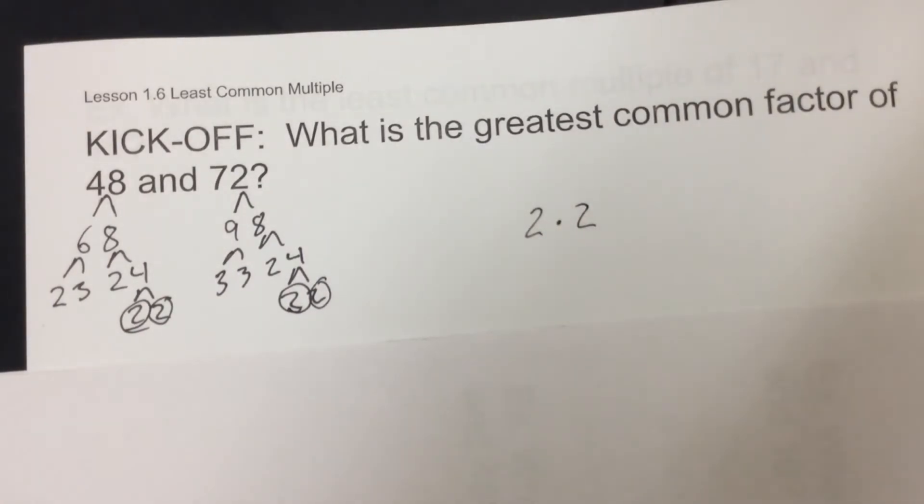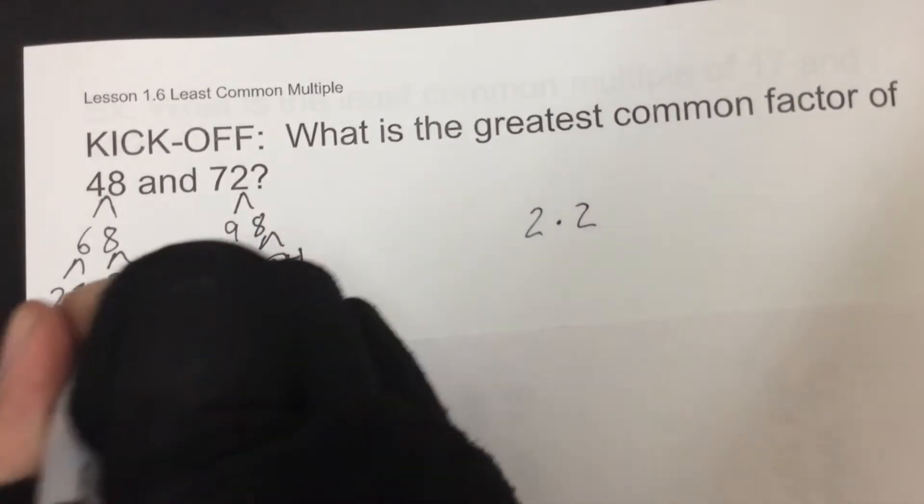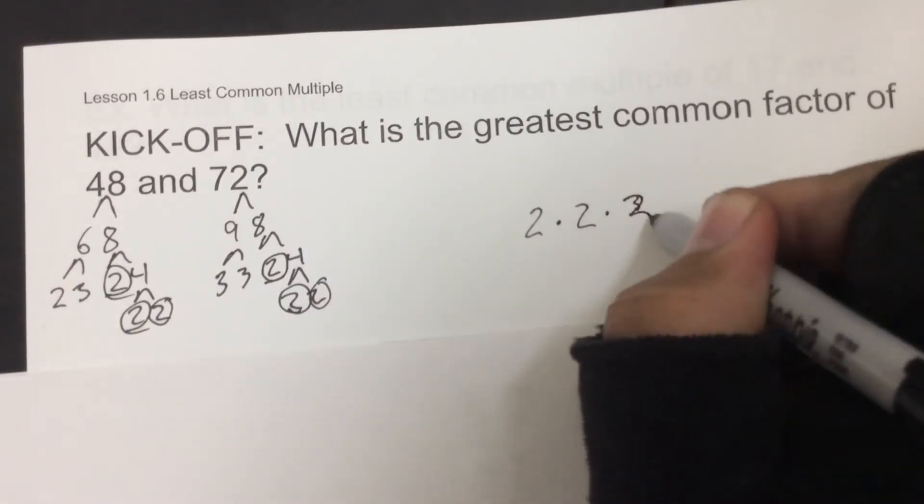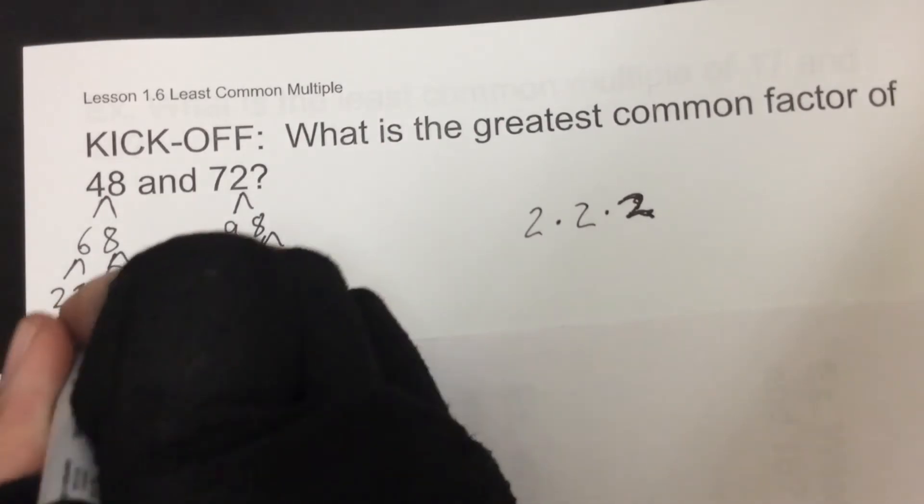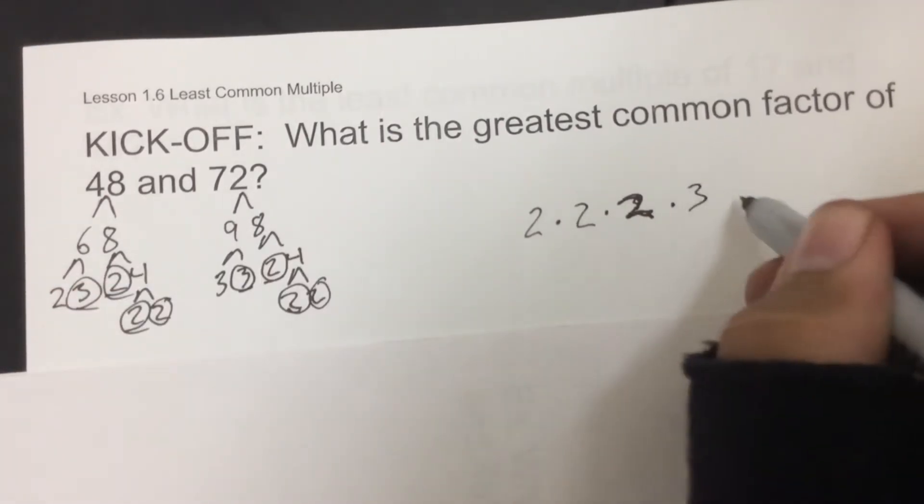We're going to multiply all these groups. Third set of 2's, so times by a 2, and then we have a set of 3's. So times by 3.